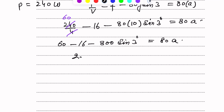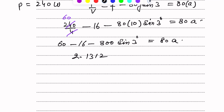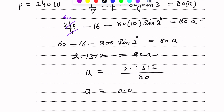Calculating the left side: 800 sin 3 degrees is approximately 41.87, so the left side gives approximately 2.1312. Therefore 2.1312 equals 80a, so a equals 2.1312 divided by 80. Finally, the acceleration is approximately 0.0266 meters per second squared.